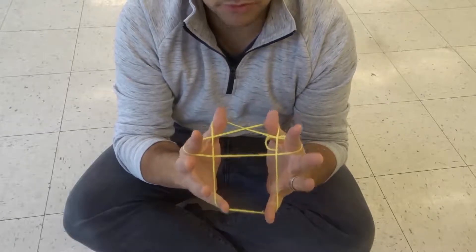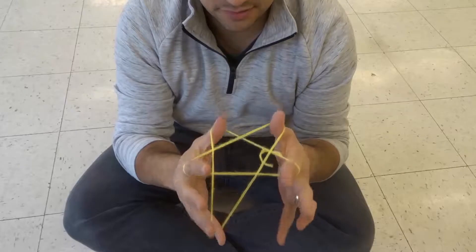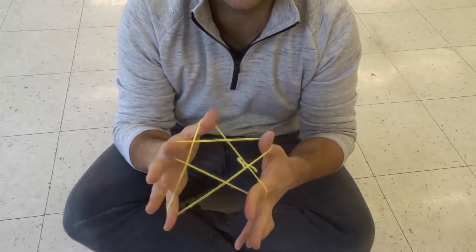Okay, at this point we're almost done. All that I have to do is remove one of the pinkies, and as you can see right here, we've created a star with string.